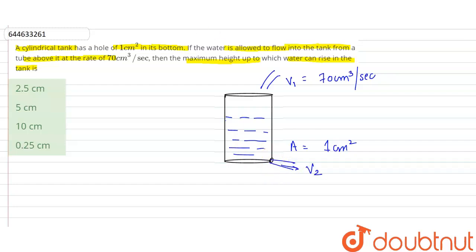When V₁ equals V₂, there will be constant height in the tank. So we have to calculate that height H.